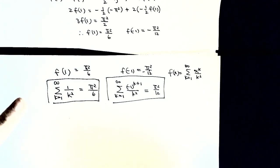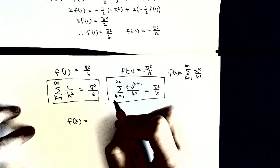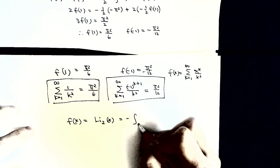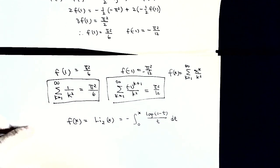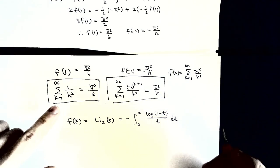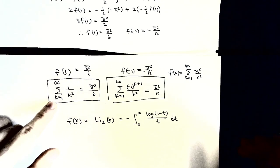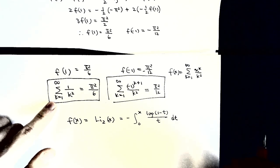That's all for today. Actually, f(x) here is called the dilogarithm function. We just use f(x) to replace these famous notations to make the reading easier. This result is very important and we will make use of it for future use. Thank you very much for this video. See you next time. Bye-bye.